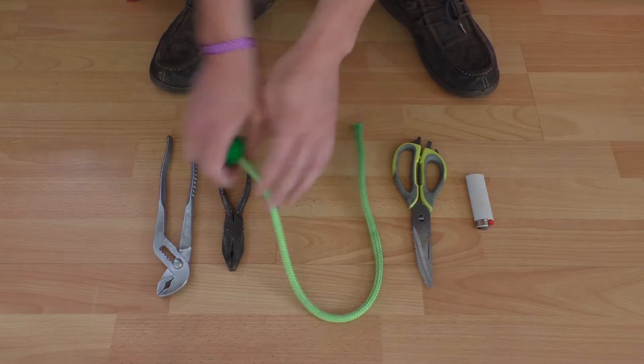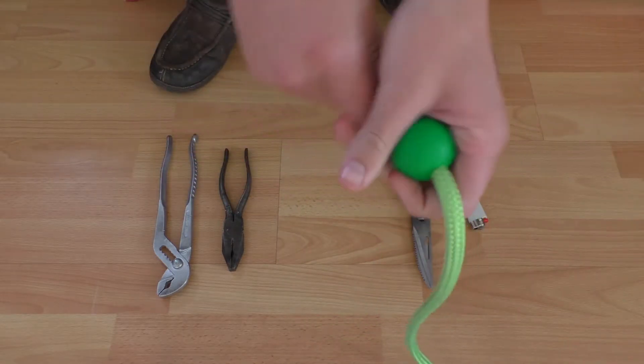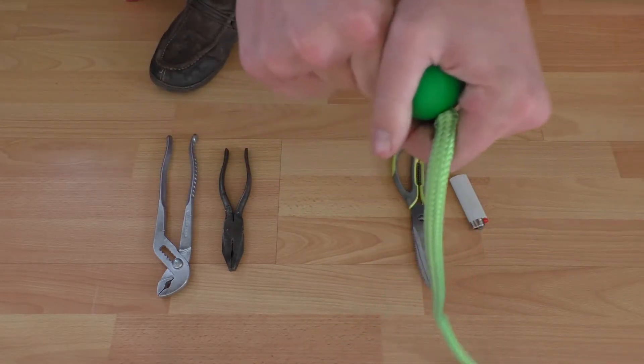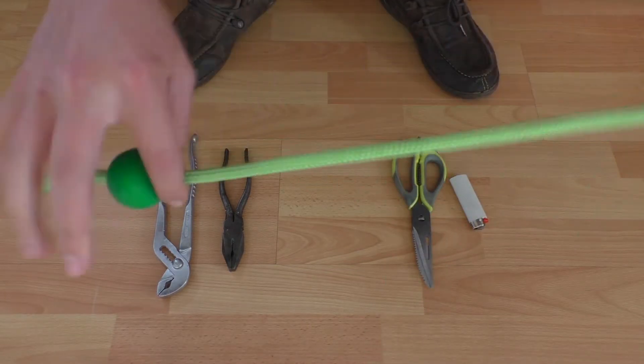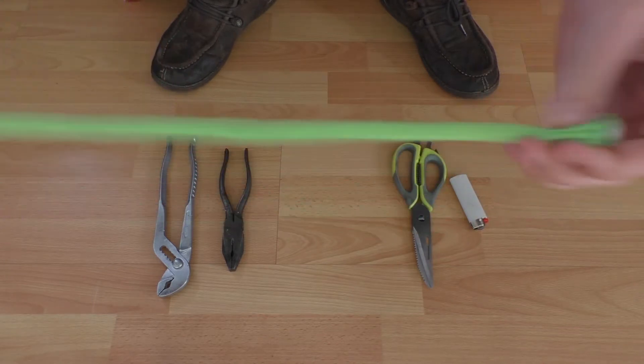So the knob slides along the tether quite easily. You're going to slide it along until you get your preferred length. This side, of course, is where the poi head would be, and that's the end.